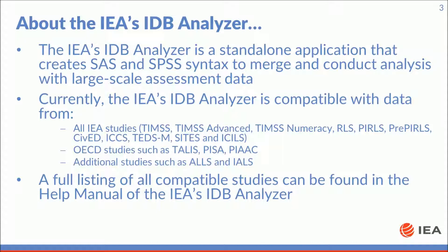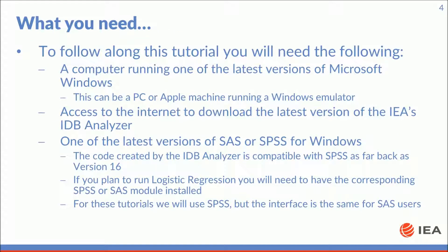A full listing of all compatible studies can be found in the help manual of the IDB Analyzer. To follow along this tutorial, you will need the following: a computer running one of the latest versions of Microsoft Windows — this can be a PC or Apple machine running a Windows emulator — access to the internet to download the latest version of the IDB Analyzer, and one of the latest versions of SAS or SPSS for Windows. The code created by the IDB Analyzer is compatible with SPSS as far back as version 16. If you plan to run logistic regression, you will need to have the corresponding SPSS or SAS module installed. For these tutorials, we will use SPSS, but the interface is the same for SAS users.